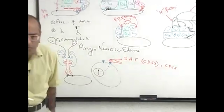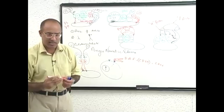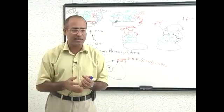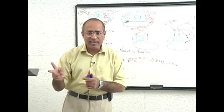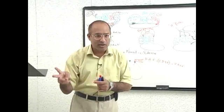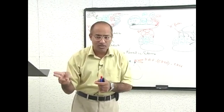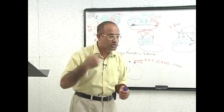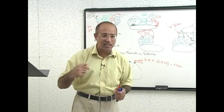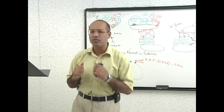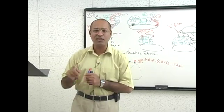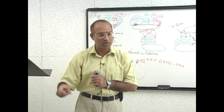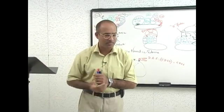Similar functions are also done by another protein, CD55. So there are many different types of proteins present on cell membranes acting as complement cutters, so that when complement tries to destroy our own cells, our cells know how to protect themselves.